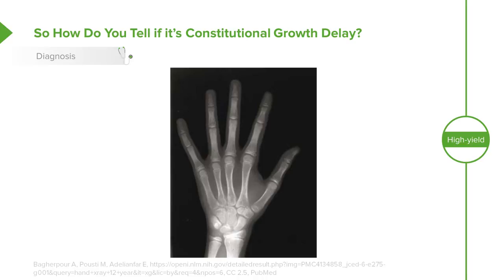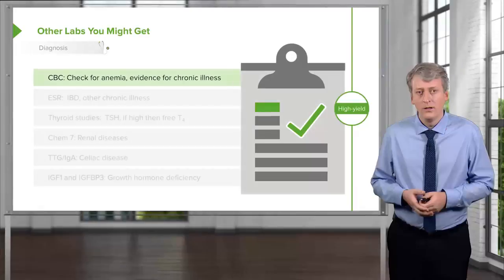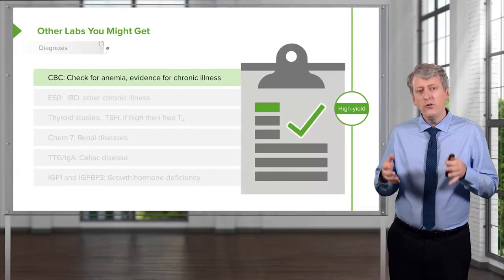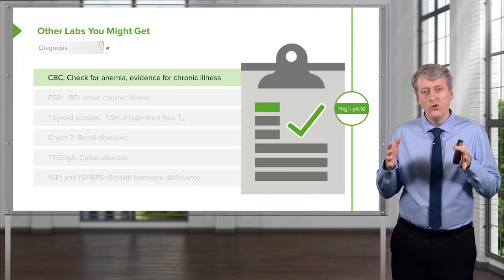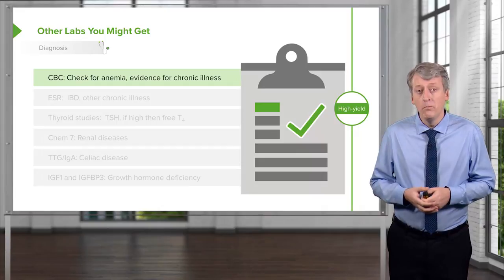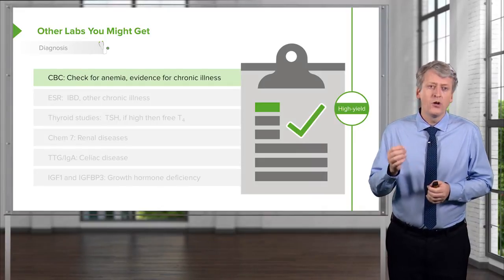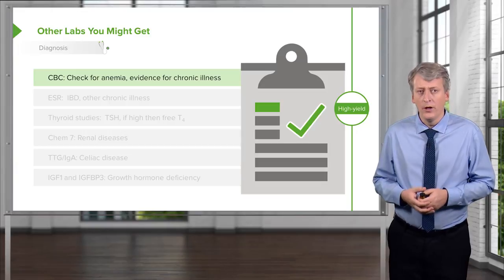If the hand x-ray were lagging three or more years, you would probably suspect growth hormone deficiency. If the hand x-ray were less than one year different, you would expect that this child actually has short stature and some other reason may be contributing for why this child is not gaining height. So if there was no delay in bone maturity, we would start to look into other causes.